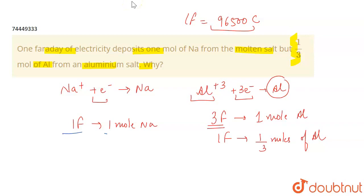So in this case, we need one faraday to deposit one mole. In this case, when we add one faraday, we get one by three moles. So these two reactions will be very clear.